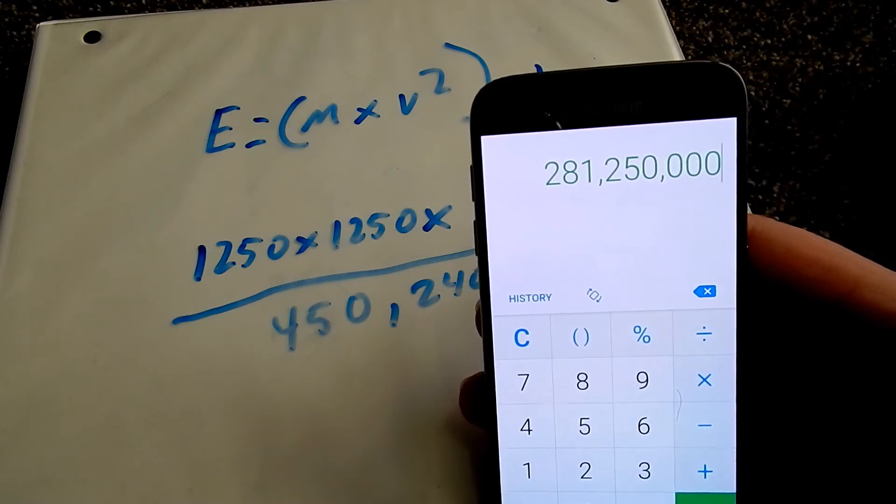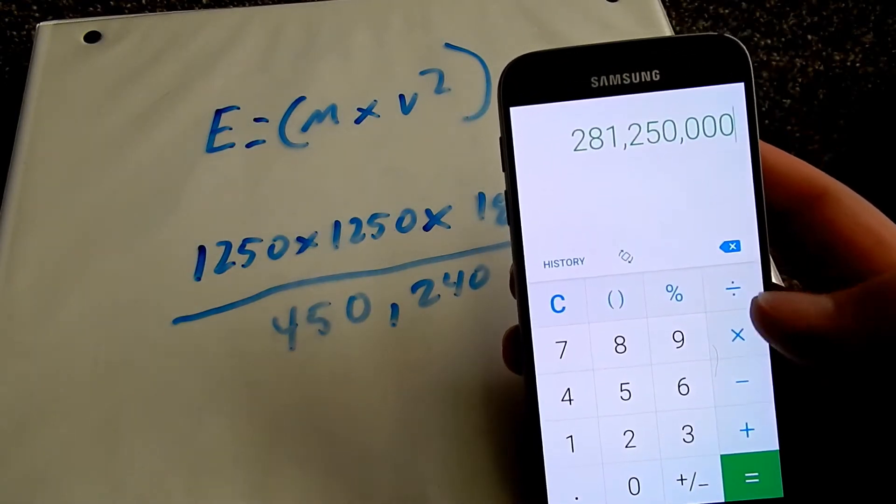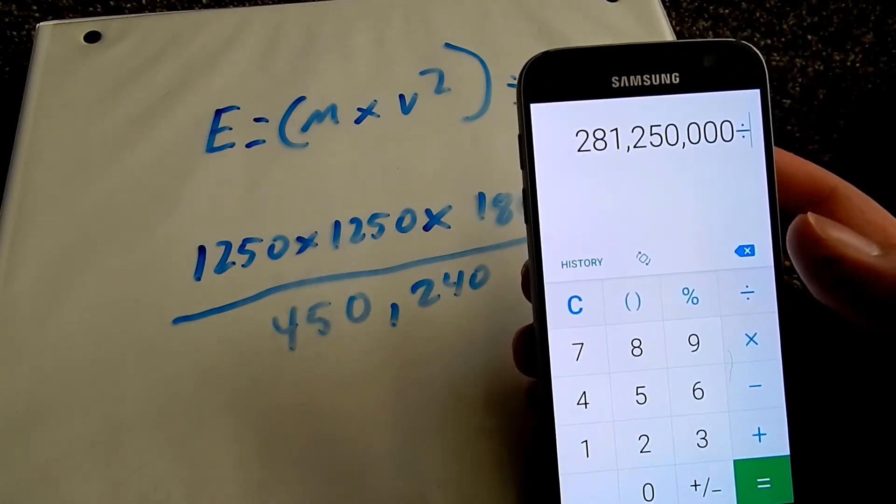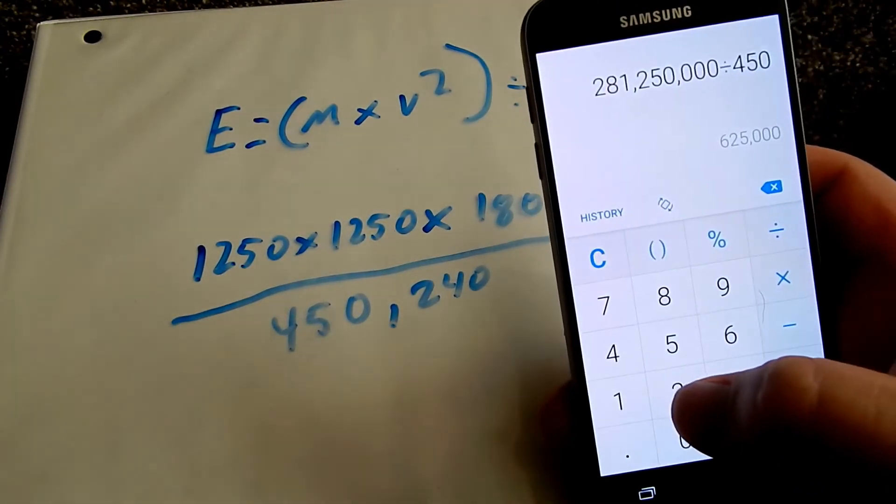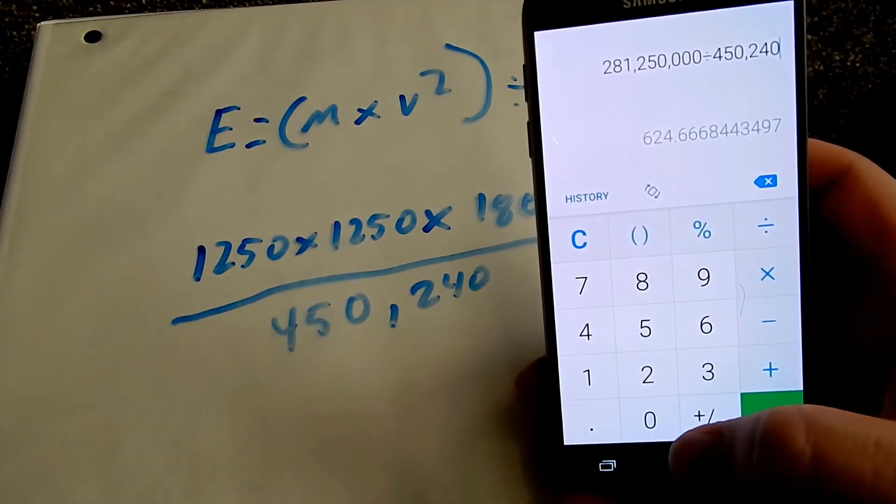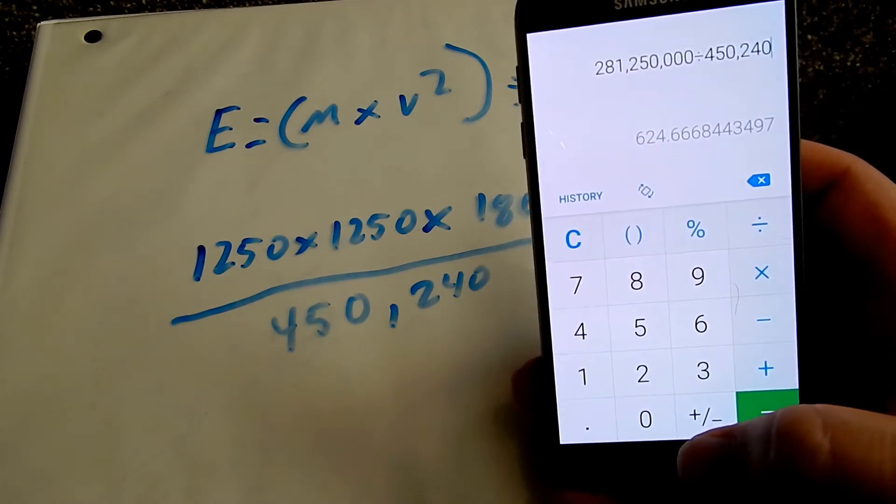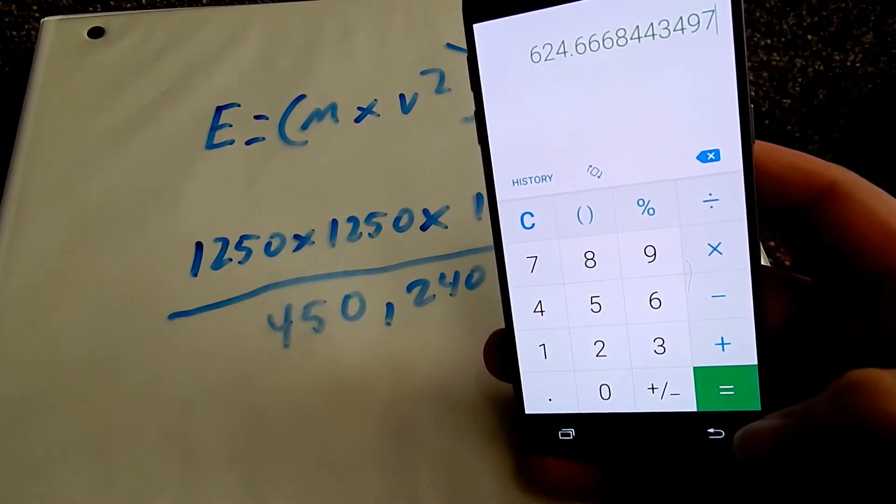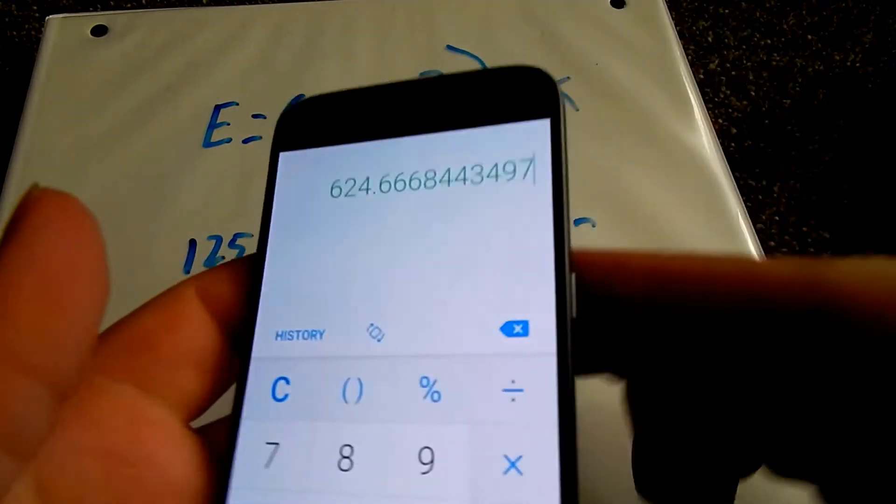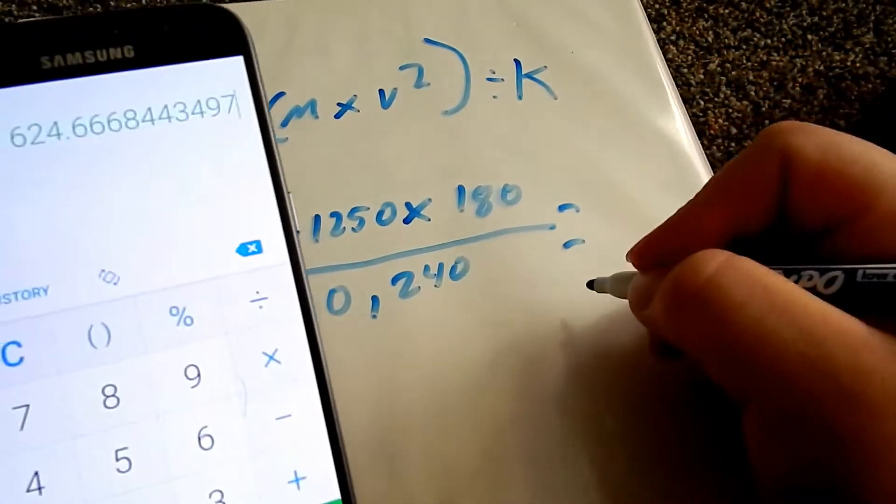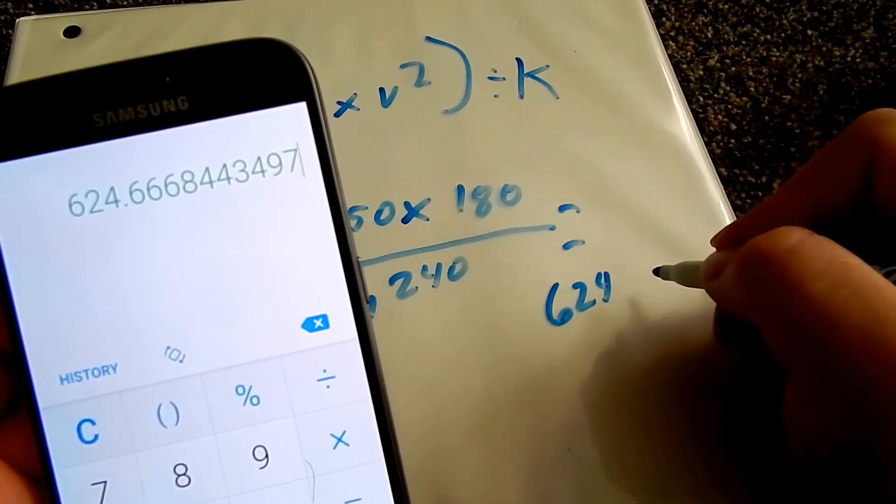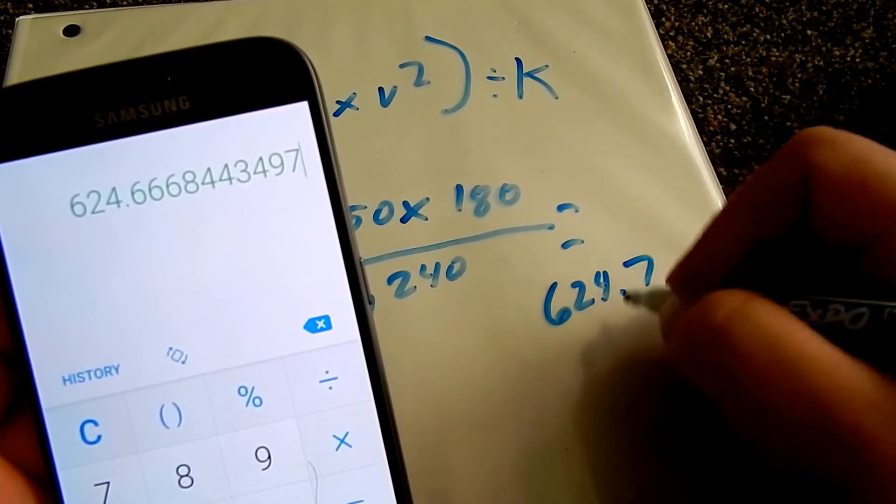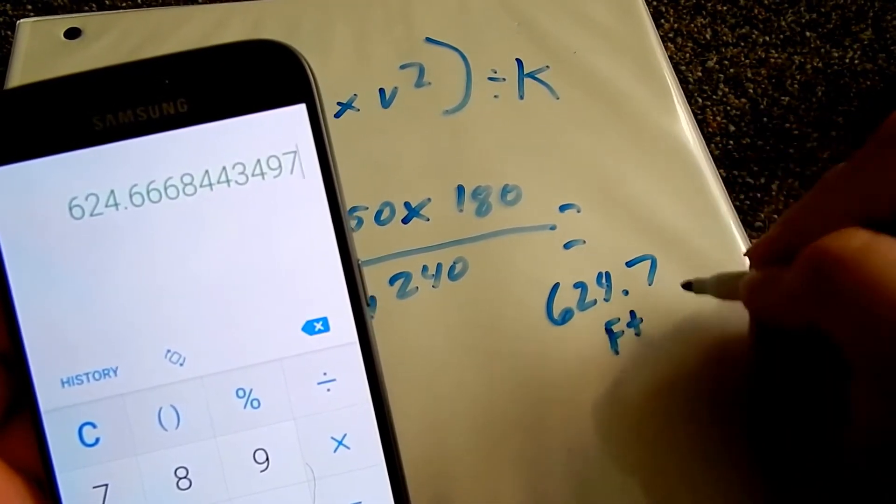So you're going to get a big number on that top one, 281 million 250,000. So we're going to go ahead and divide by 450,240 like that. And this gives us a rough estimate of 624.7, for rounding up, foot pounds of energy.